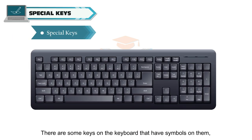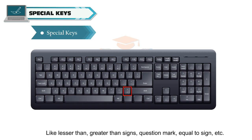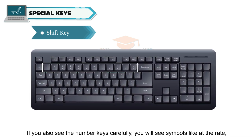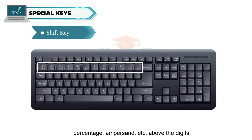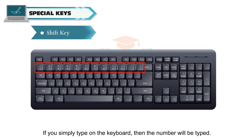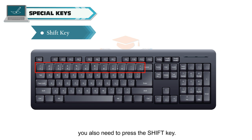There are some keys on the keyboard that have symbols on them, like lesser than, greater than signs, question mark, equal to sign, etc. If you also look at the number keys carefully, you will see symbols like at the rate, percentage, ampersand, etc. above the digits. If you simply type on the keyboard, then the number will be typed. To write these symbols along with the number key, you also need to press the shift key.